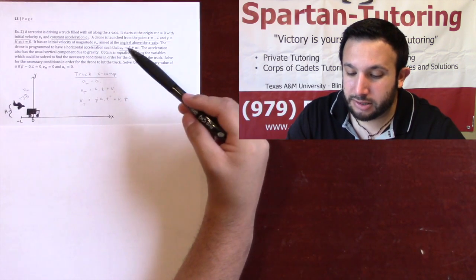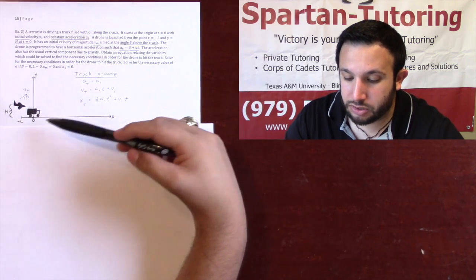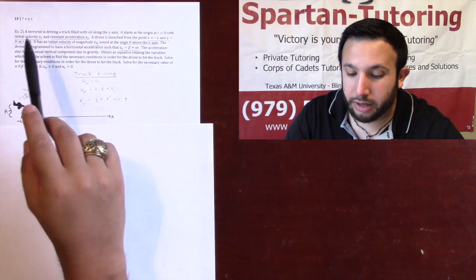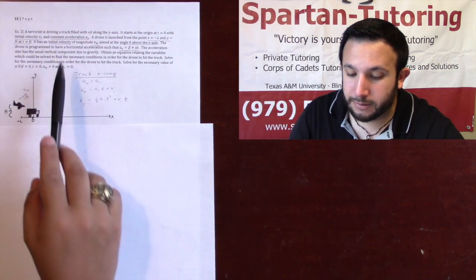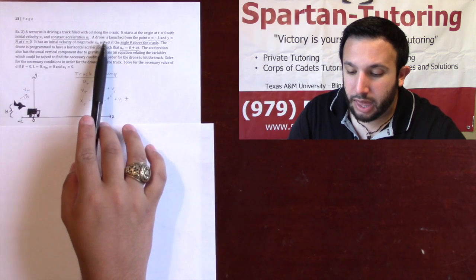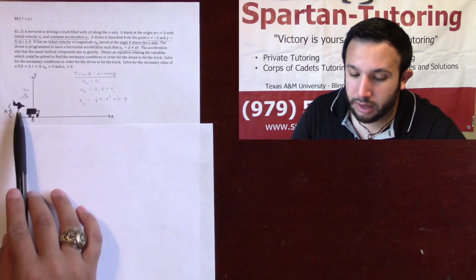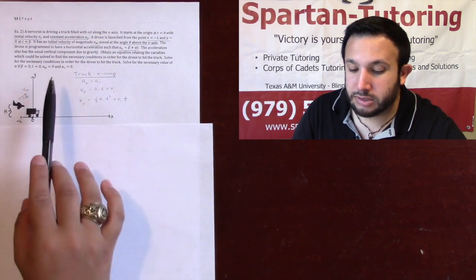Let's say that a terrorist is driving a truck filled with oil along the x-axis. It starts at the origin at t equals zero with an initial velocity of v1 and a constant acceleration of a1.